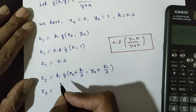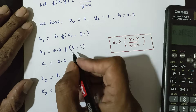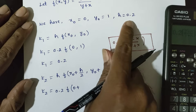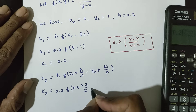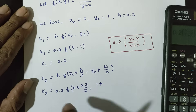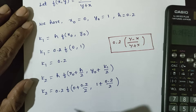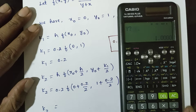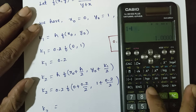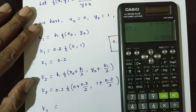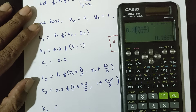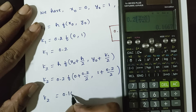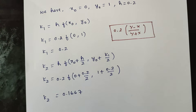K2 is equal to h into f of x0 plus h by 2, y0 plus k1 by 2. Substituting: y value = 1 plus 0.2 by 2, x value = 0 plus 0.2 divided by 2. The result y1 is equal to 0.1667. K2 value is 0.1667.